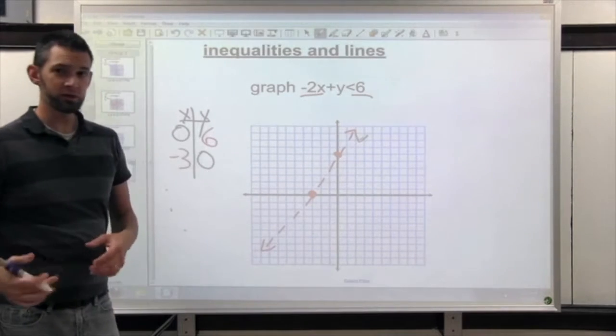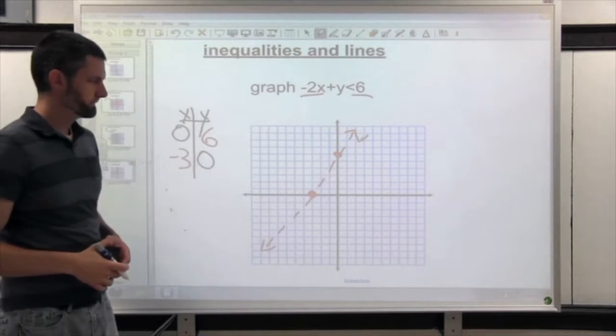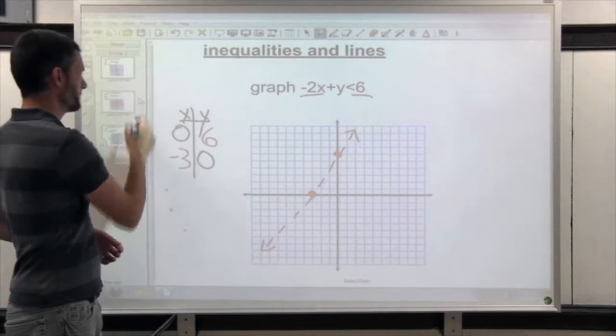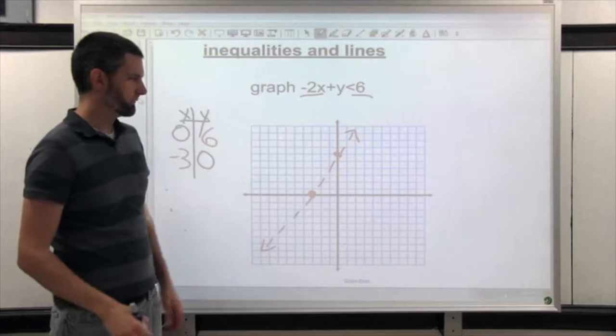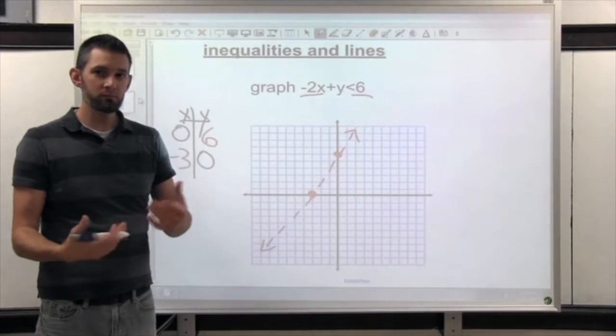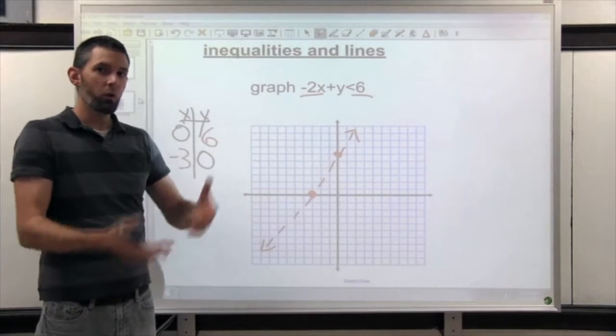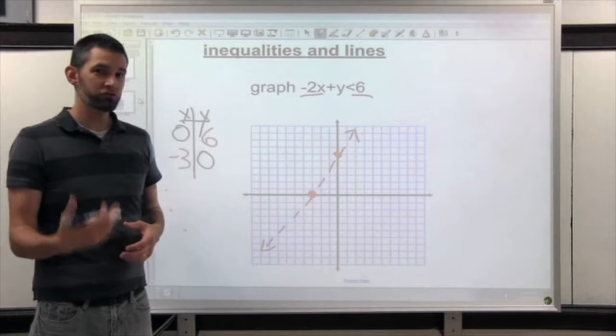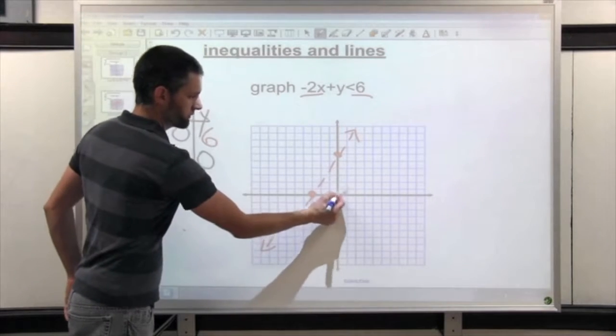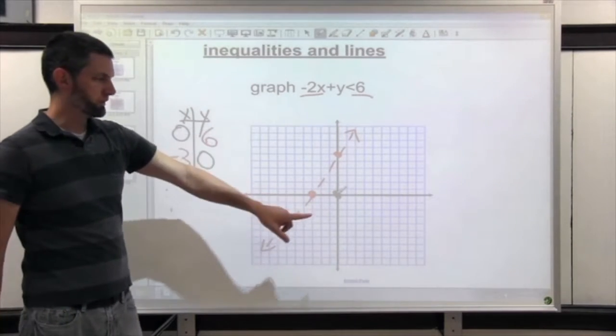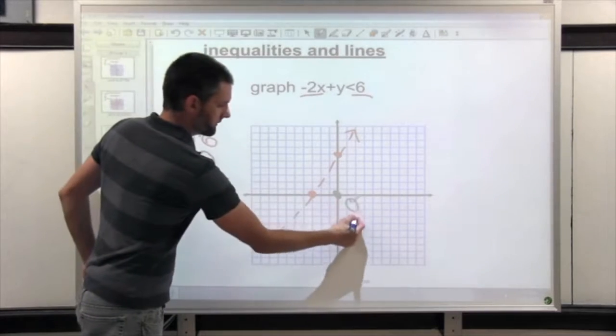The next thing we need to determine is which side we need to shade. Here's what's a little bit different about standard form. Less than might mean shading under or above. And we have to try a point to know which side. The easiest point to try is 0, 0.